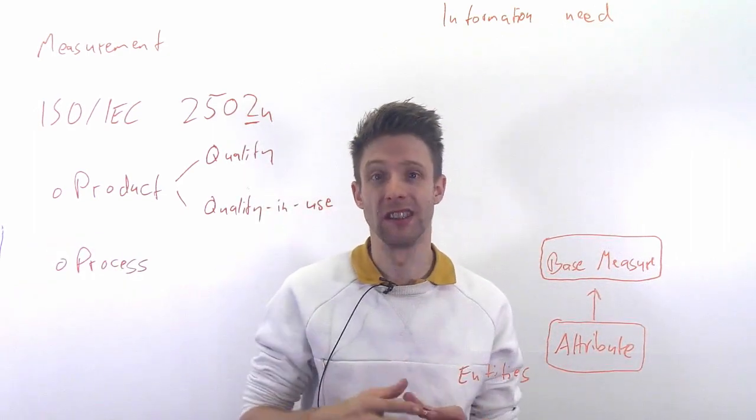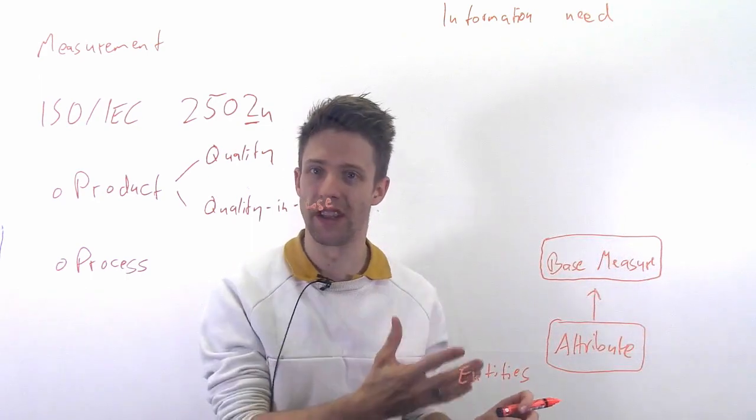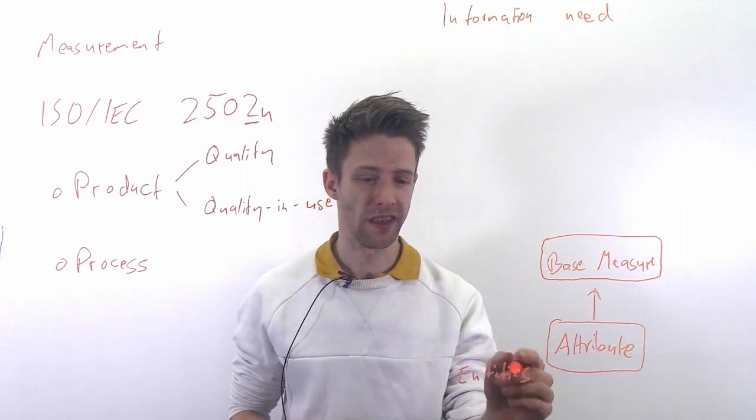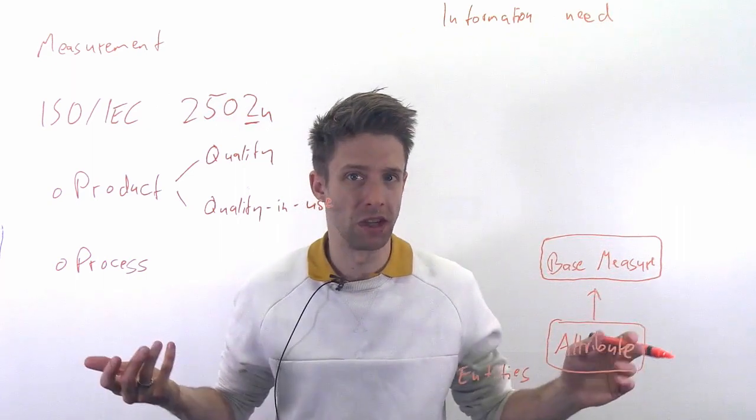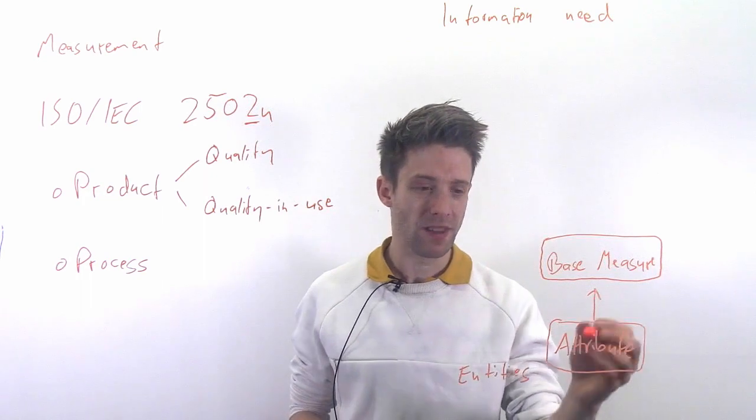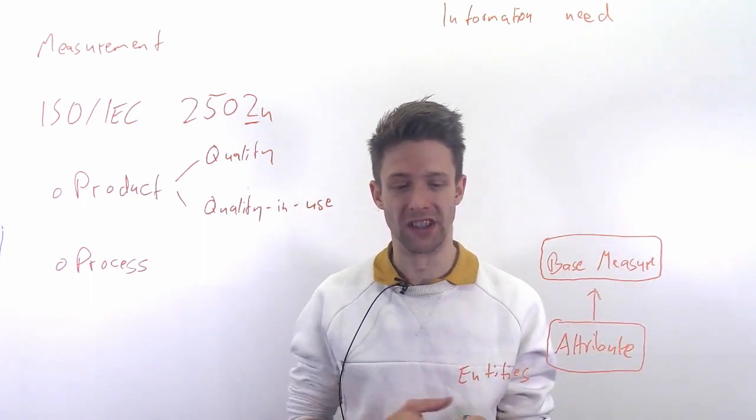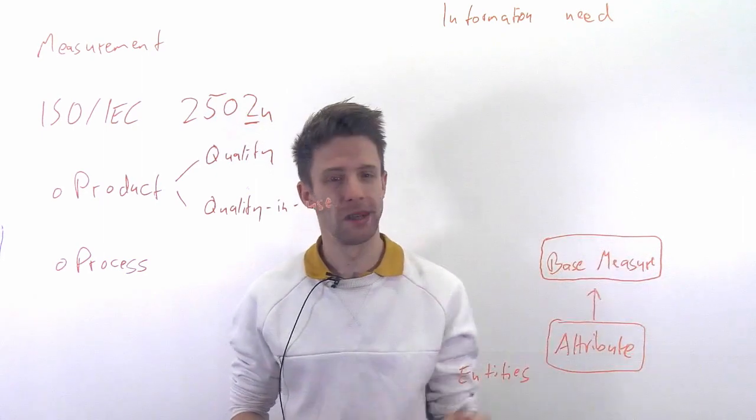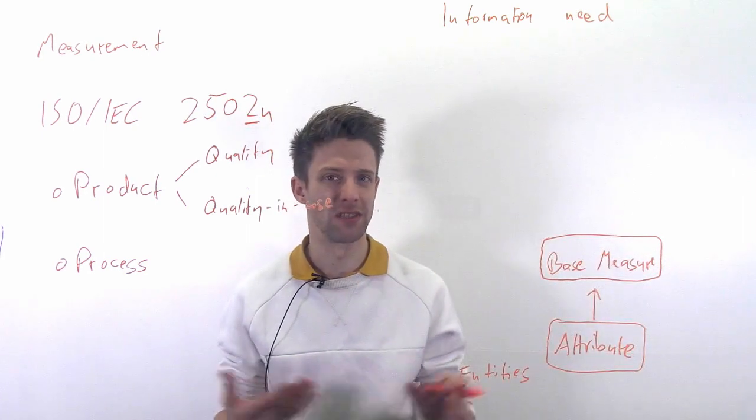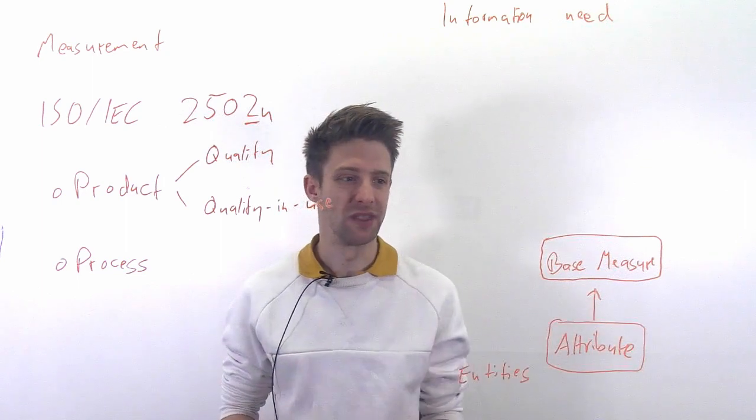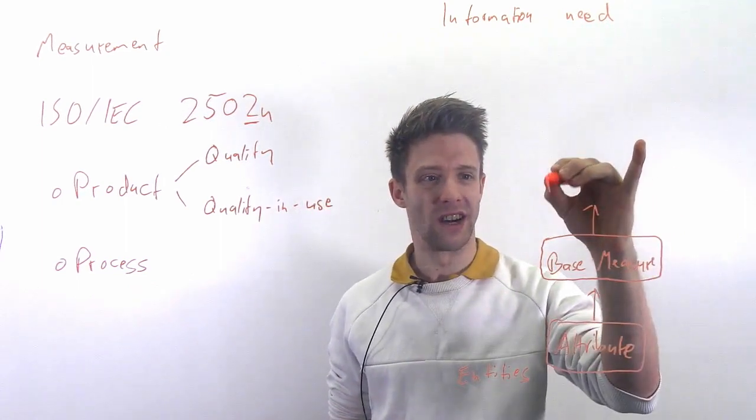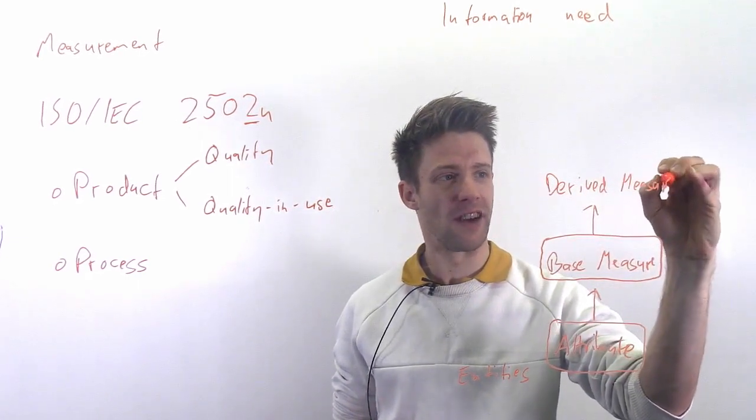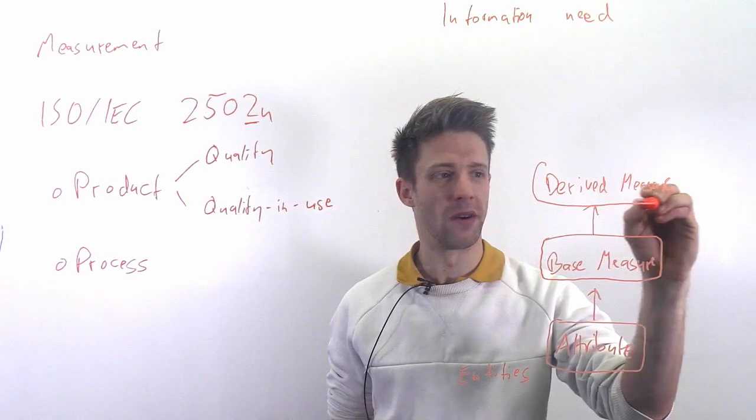And then you start with the so-called base measures. So that's a direct measure of one of these attributes. For example, you could measure the lines of code of the software, but how many lines your code has gives you an indication of how large the software is. Another way that you could use is to just measure the file size, measure the overall file size. This of course gets more complicated - do you want to measure the lines of code with comments or without? And things like that. So this is actually quite tricky.